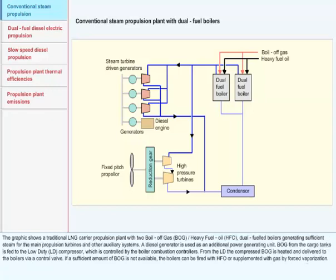Conventional Steam Propulsion: The graphic shows a traditional LNG carrier propulsion plant with two dual-fueled boilers generating sufficient steam for the main propulsion turbines and other auxiliary systems. They can be fired on boil-off gas or heavy fuel oil.